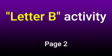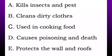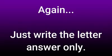Let us now move to page 2 for letter B activity. I will show you the pictures one at a time. Number your papers from 1 to 5, and on each number, write the letter from these options that best describes the picture shown. The options are: A, kills insects and pests; B, cleans dirty clothes; C, use in cooking food; D, causes poisoning and death; and E, protects the wall and roofs. You will just write the letter for the answer.